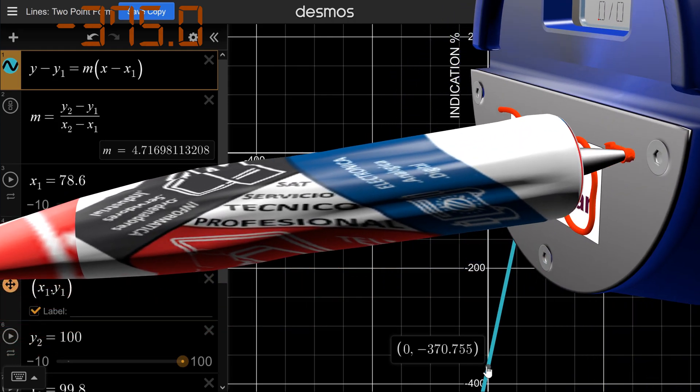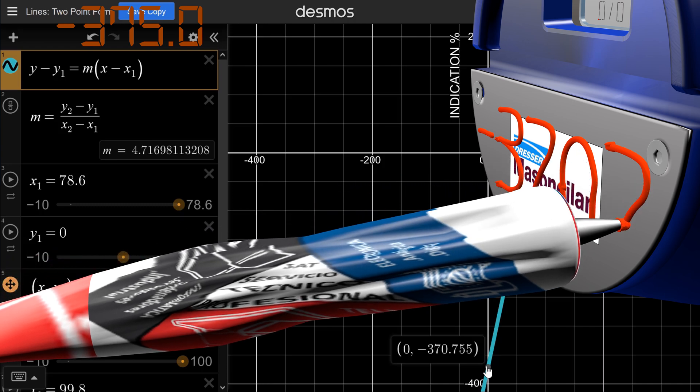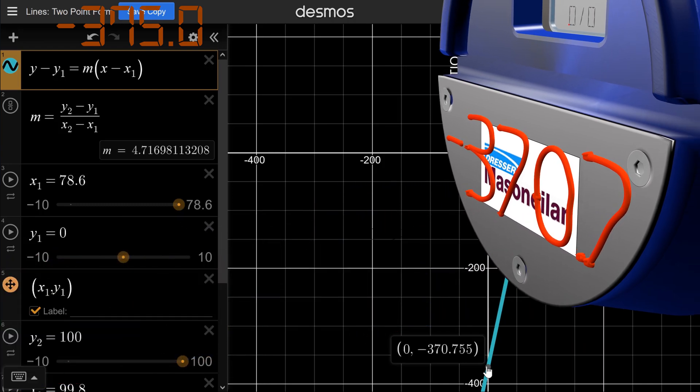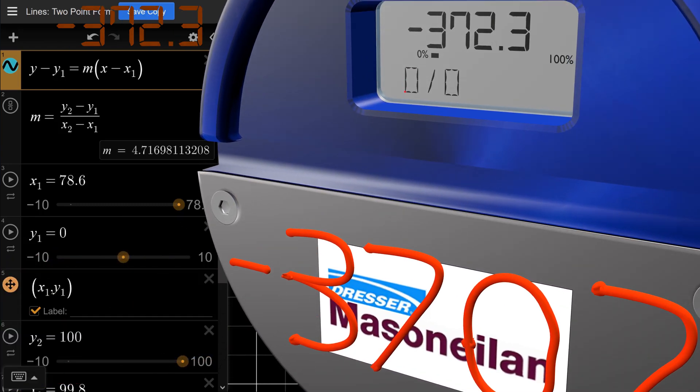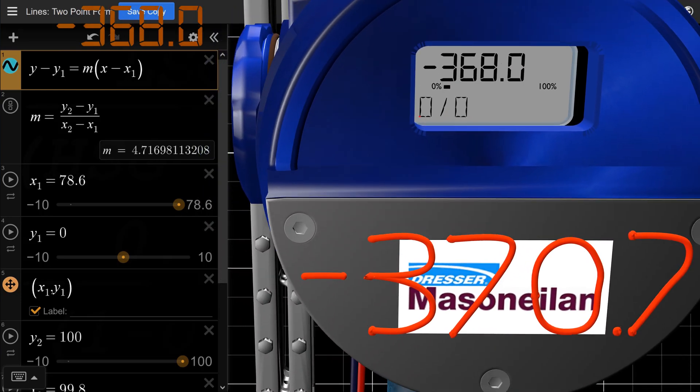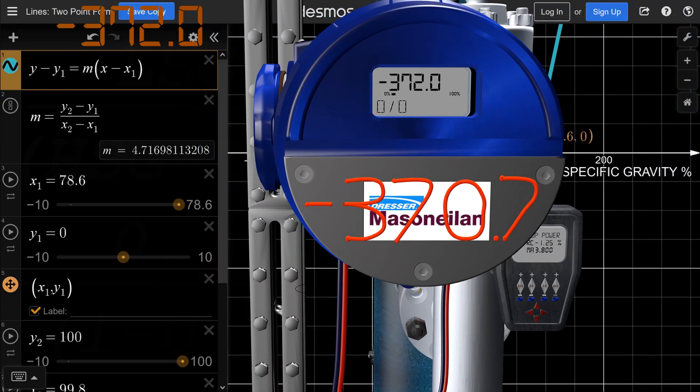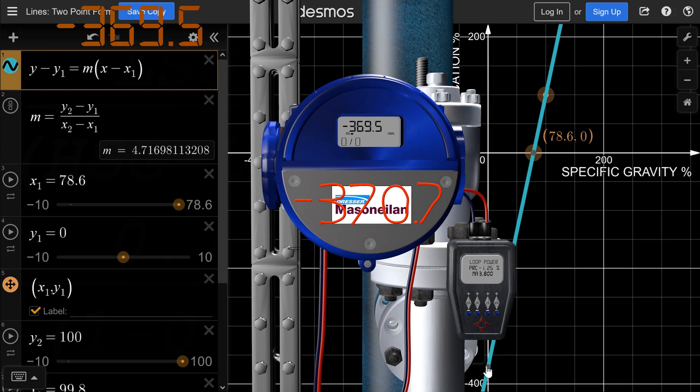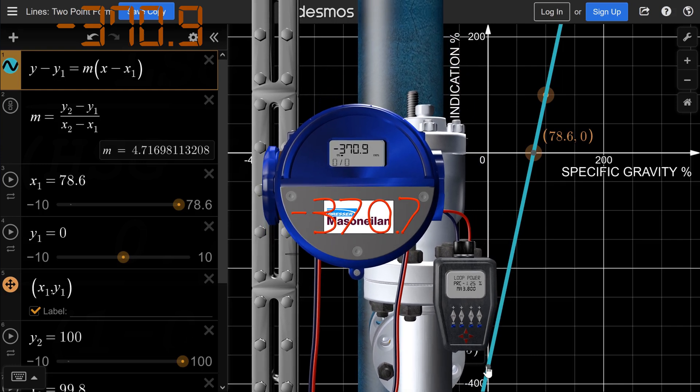Now we write confidently this value on the front cover. For the following years, we will be able to check the transmitter in both 0 and span, just closing the block valves and emptying the chamber. This is the ultimate check which could be done easily from the unit operators.